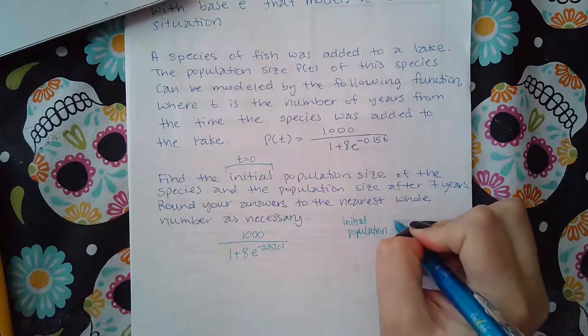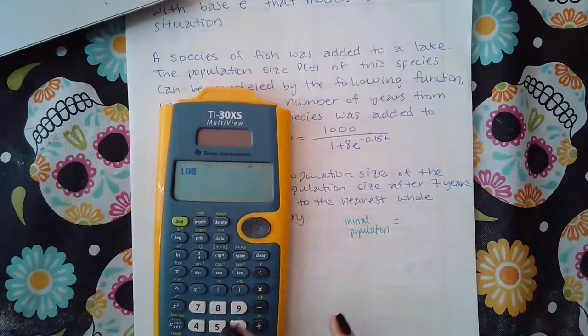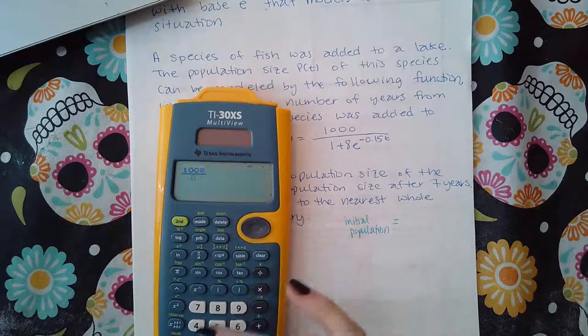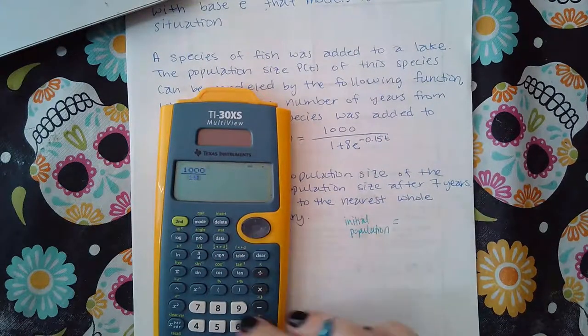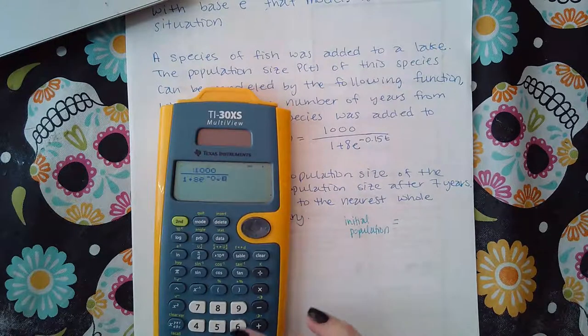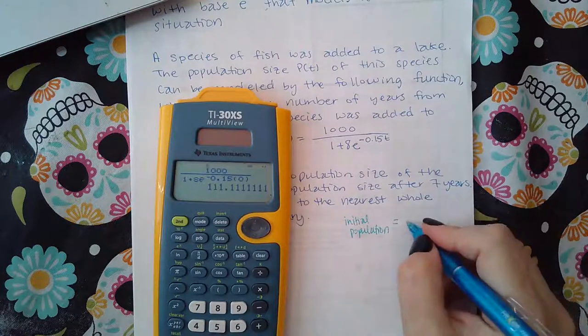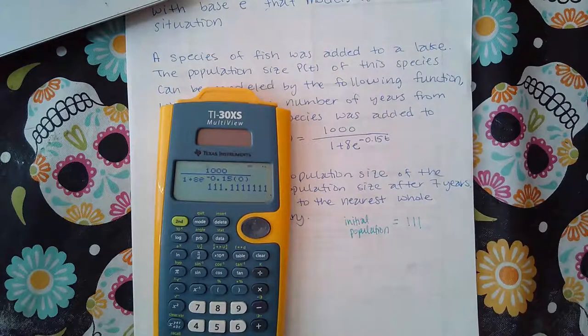Let me type that in my calculator: 1000 divided by the quantity 1 plus 8e to the negative 0.15 times zero. And it gives me 111, so there's 111 fish in this lake right now, initially.